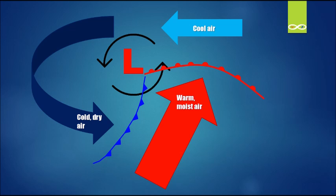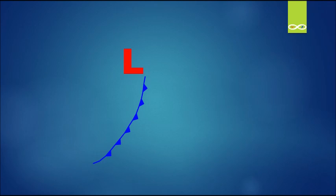Now that we know about the makeup of the different air masses and how they flow, let's talk about how this ties into precipitation. Let's bring back the area of low pressure and the two fronts.